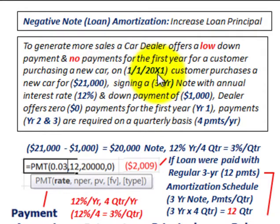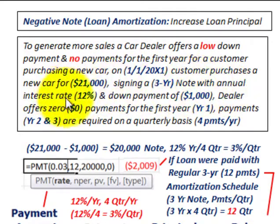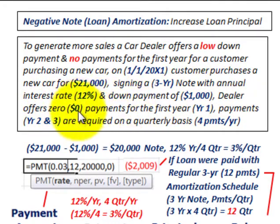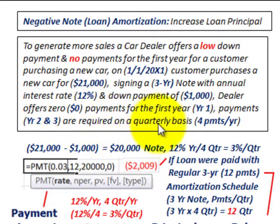On 1/1/20X1, this customer purchases a new car for $21,000. They sign a three-year note with an annual interest rate of 12%. The down payment is $1,000. The dealer offers zero payments for the first year, and payments for year two and year three are required on a quarterly basis — four payments per year.